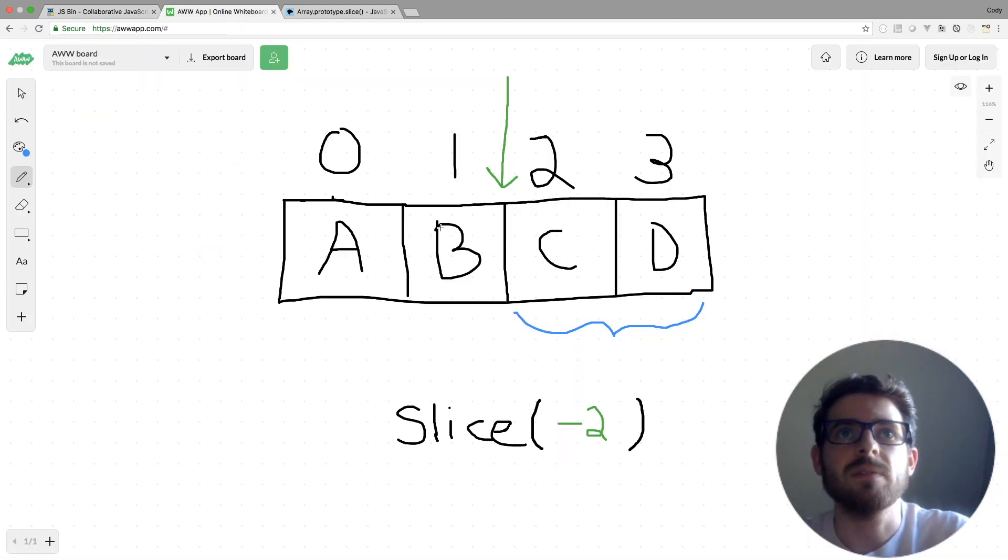And of course, negative three would give us BCD, negative four would give us ABCD. So that is examples using the first argument. Let's move on to using two arguments. I'll put a comma there to represent both of the arguments we're going to pass.